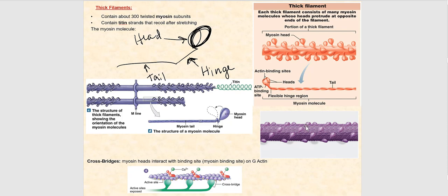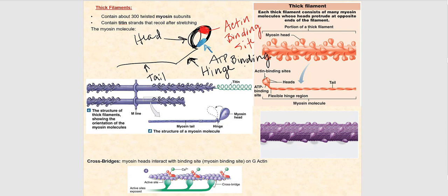Looking at the head of the thick filaments carefully, we see two pockets. The first, shaded in red, is called the actin binding site — the pocket in which actin will bind. The second pocket, shaded in blue, is the ATP binding site. It's called the ATP binding site because that is where ATP will bind.